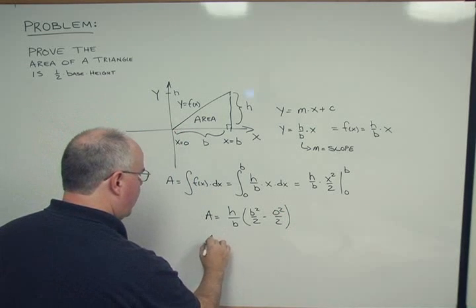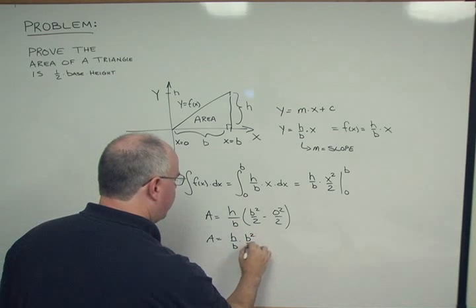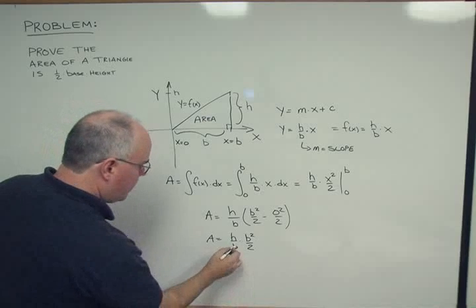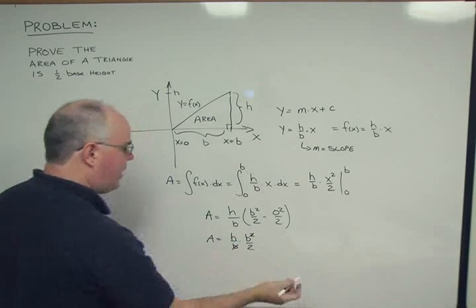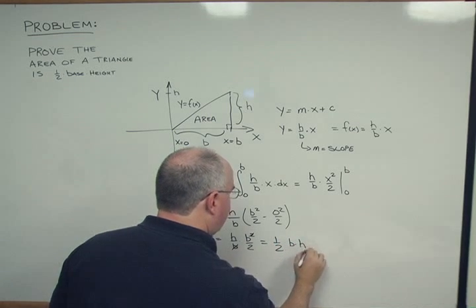So a is equal to h over b times b squared over 2. Well this b cancels that and we get one half base times height.